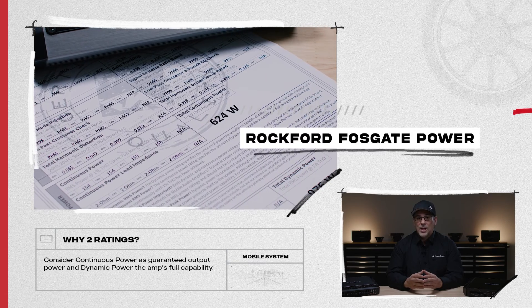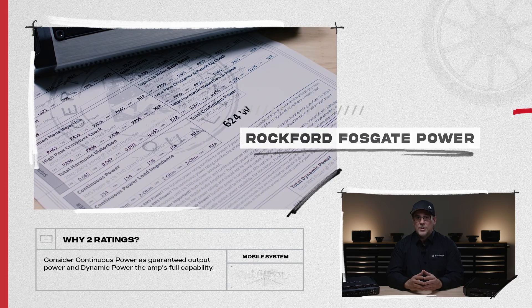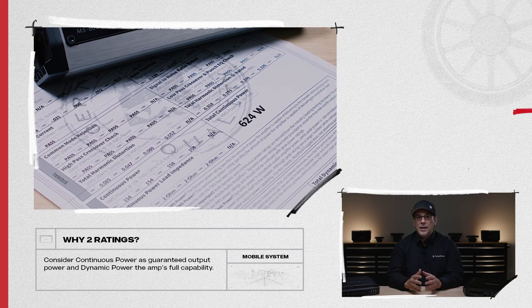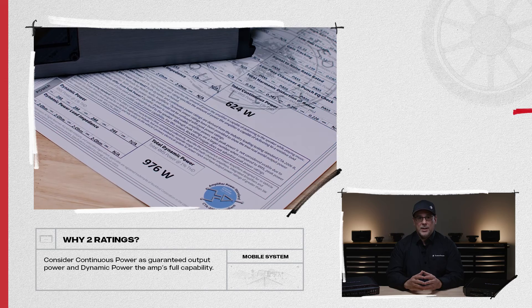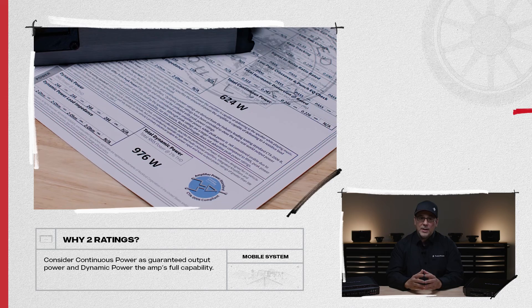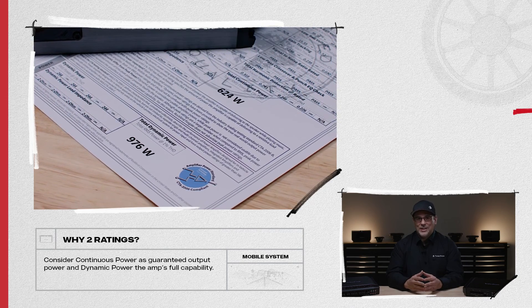On Rockford Fosgate amplifiers, you'll see we publish both numbers on the performance verification certificate, or the burst sheet. You'll see the continuous power and the dynamic power rating. Both conform to the CTA 2006 standard. This gives you a better understanding of the amplifier's full capability and how it powers your system. Hopefully this helps you understand what dynamic and continuous power are and how the ratings work together when selecting an amplifier.